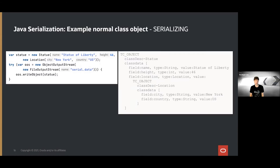We have our serialized form. It's a simplified version for demonstration purposes. The main bits are a container object — TC_OBJECT — containing the type of the object and then the data: the fields, each with name, type, and value. We extracted the object state and have the serialized form. That's kind of straightforward. The more interesting part is deserialization.